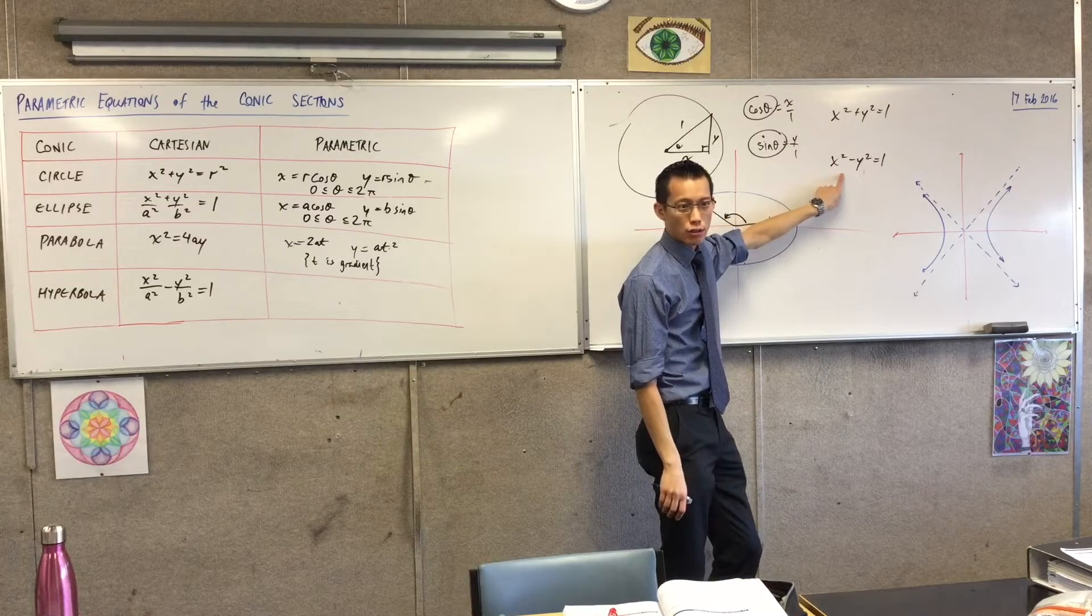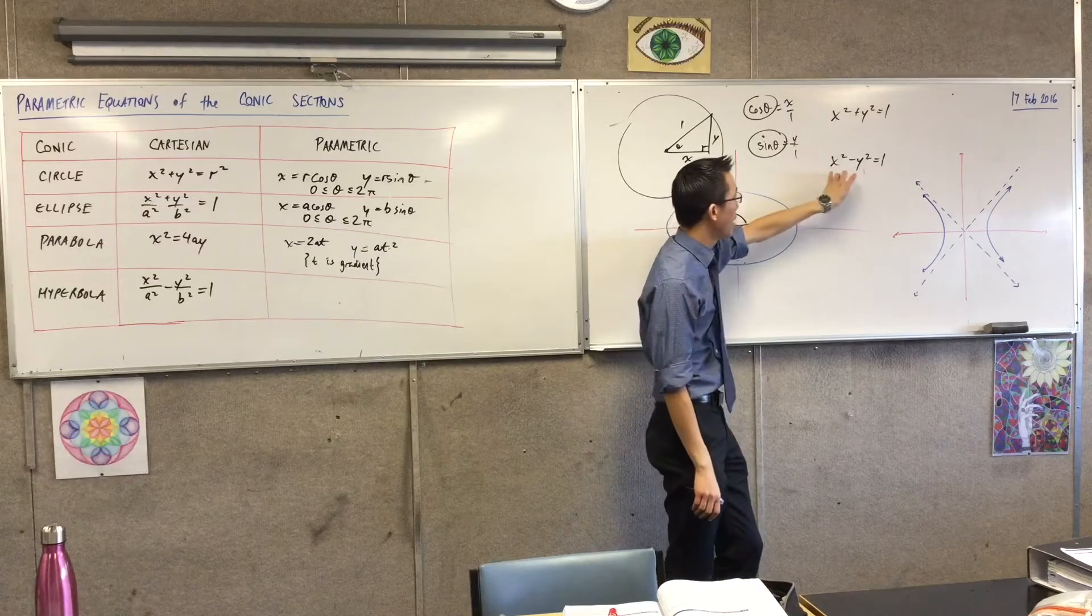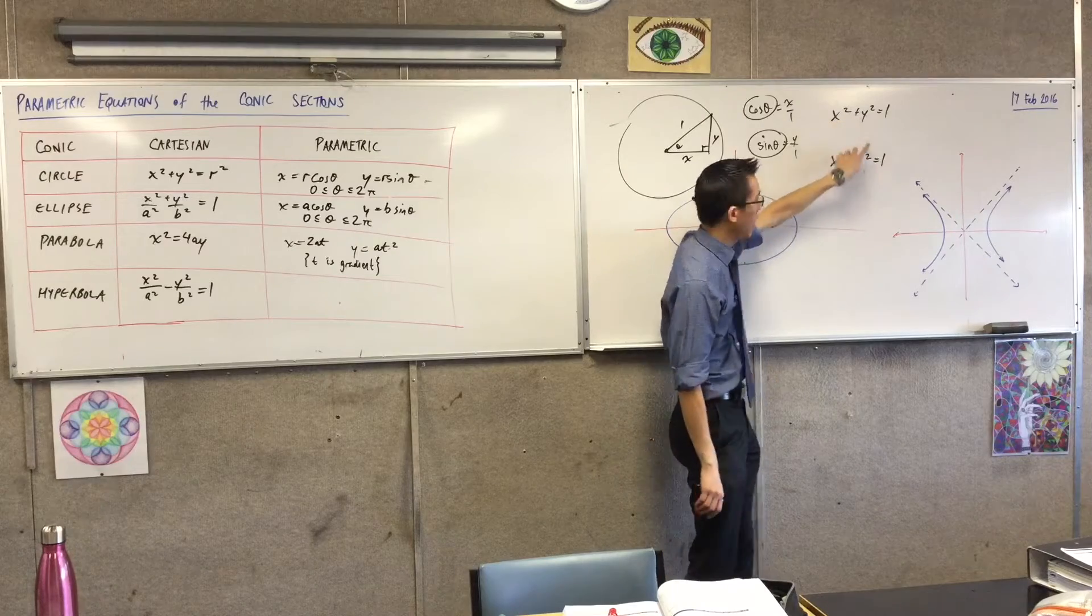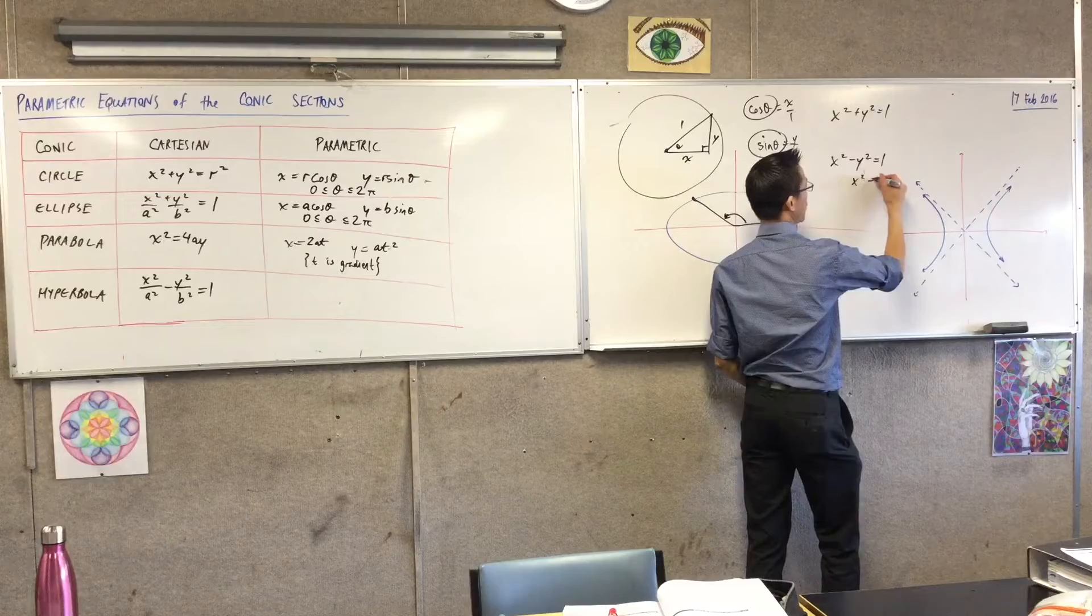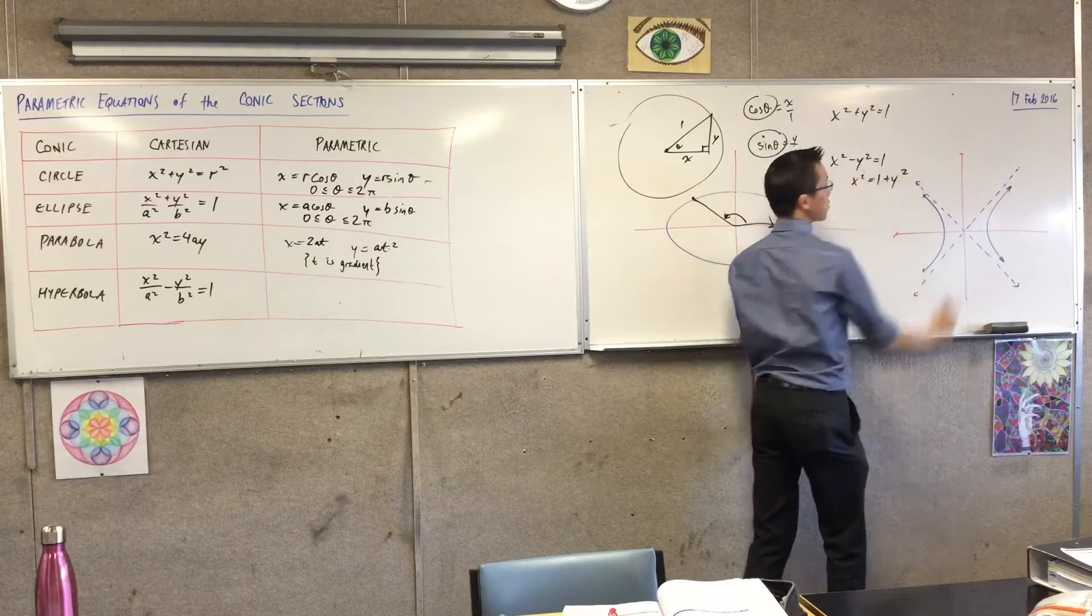This is not a right-angled triangle, at least not in its current form. I have a difference here, not a sum. In order to make it clear what's going on here, I just need to adjust it ever so slightly.